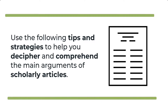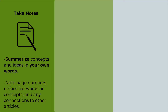Scholarly articles are written by scholars for an audience of other scholars, and thus assume prior knowledge of the subject, which you likely do not have. They are also written with language and tone that is technical and jargony. To decipher and comprehend the main arguments effectively and efficiently, follow these tips: while reading, take notes and summarize important concepts and ideas in your own words. Note the page number where the idea is discussed, note any unfamiliar words or concepts to look up later, and note any connections to other articles you have read.